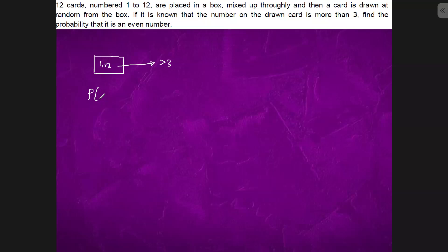Find the probability that it is even given that it is more than 3. This is probability of drawing an even card times probability of card having more than 3 given it is even, upon P(even) times P(more than 3 given even) plus probability of it not being even but card is more than 3.